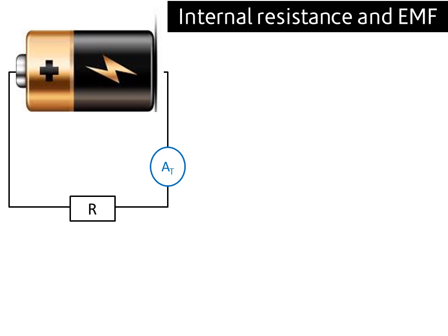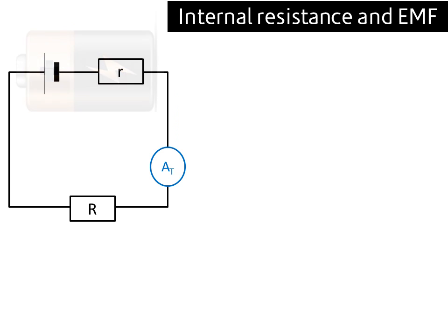So we can represent that battery, instead of just a single battery circuit symbol, we can use this notation here. The little r, the small resistor there, is a symbol that is always used to indicate internal resistance.